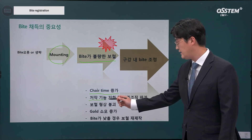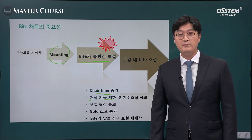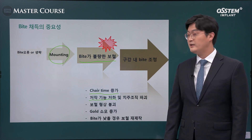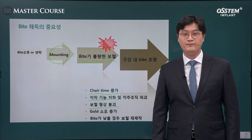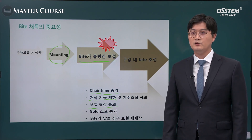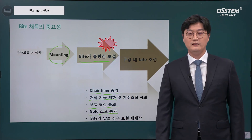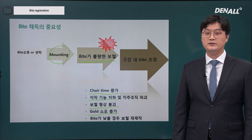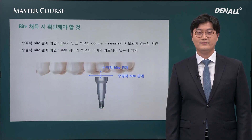If the bite is low, mastication will be a problem. Ideally the occlusal plane is created correctly, but if the bite is too high and you have to adjust it orally, the prosthesis form will be destroyed. If the patient wanted gold and you created the prosthesis in gold, but the bite is too high, making an adjustment will consume a lot of gold. And if the final bite is low, you have to recreate and redo the prosthesis again.